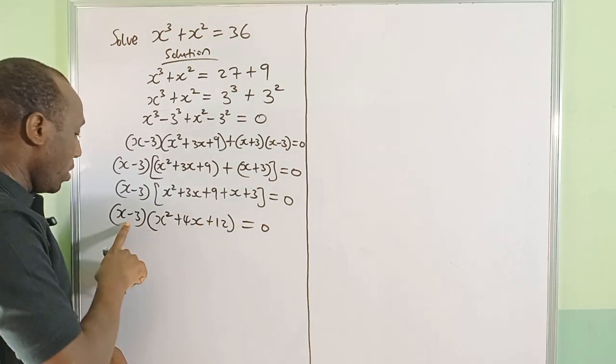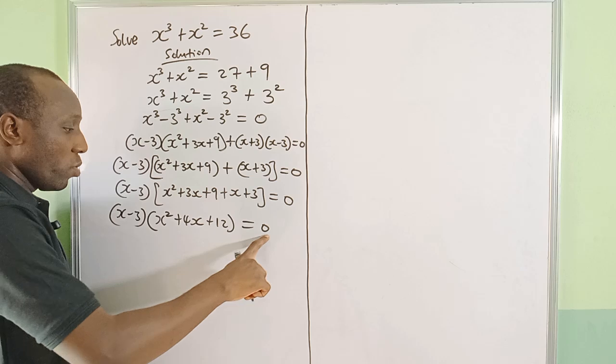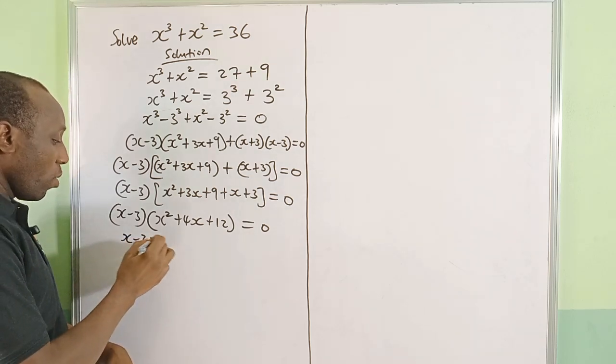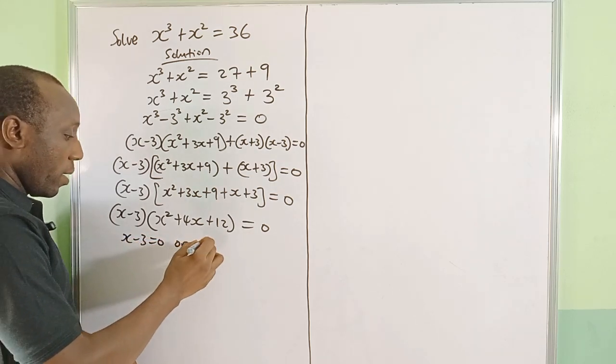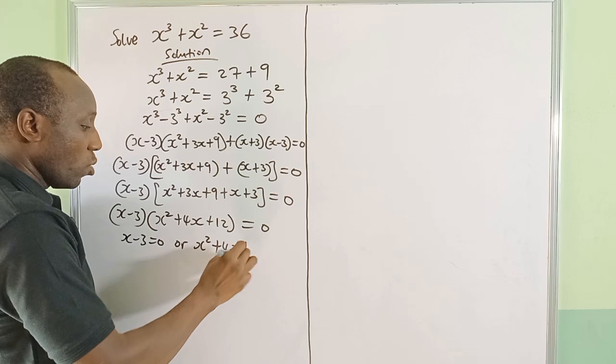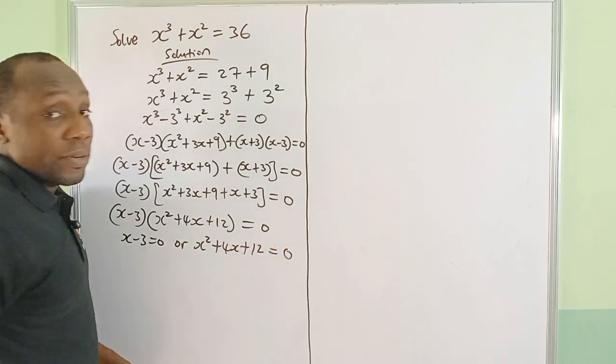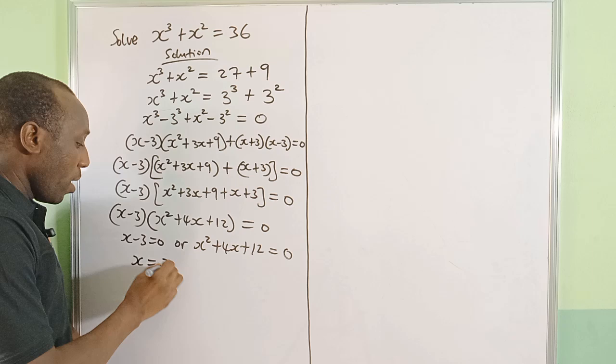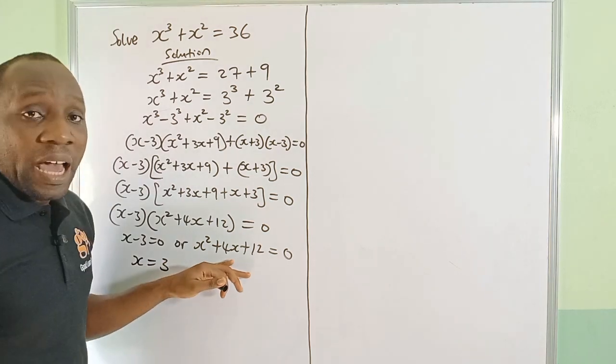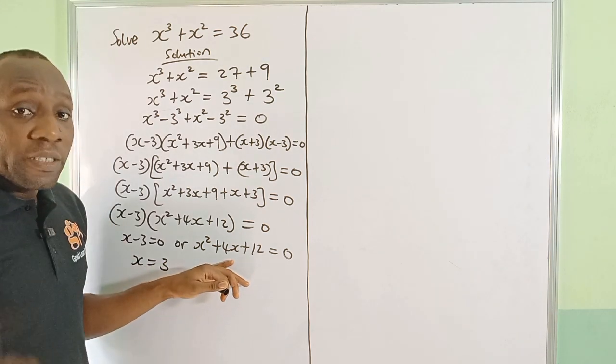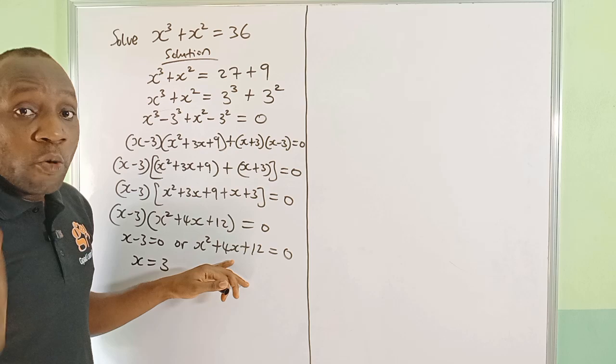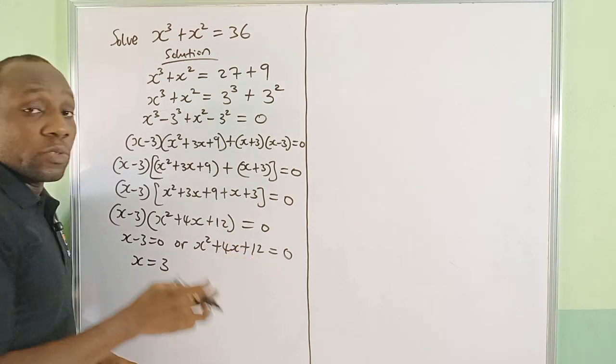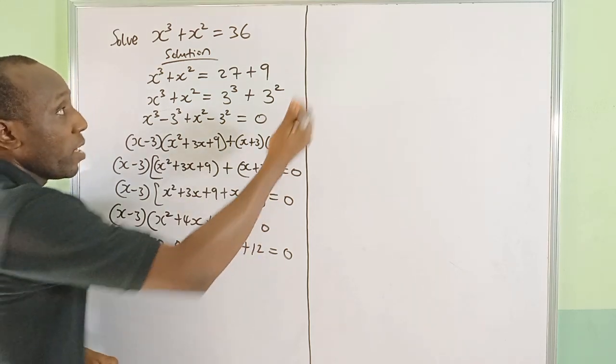So x - 3 = 0 or x² + 4x + 12 = 0. If you move -3 over, that will be x = 3. But we're not sure if this has real root, imaginary root, or equal root. I'm going to use discriminant to test the nature of this root.